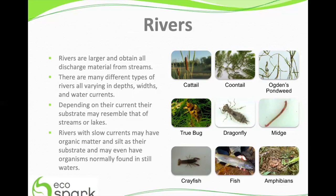Rivers are larger and obtain all discharge material from streams. There are many different types of rivers, all varying in depths, widths, and currents. Depending on the current, the substrate may resemble that of streams or that of lakes. Rivers with small currents may have organic matter and silt as their substrate and may even have organisms normally found in still waters.